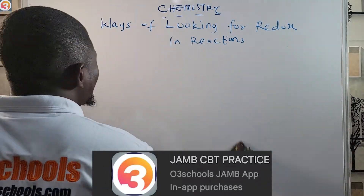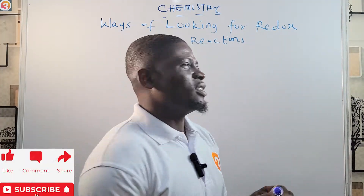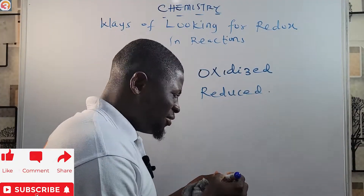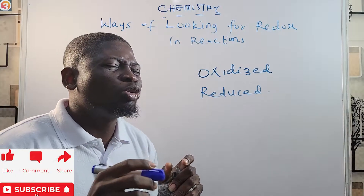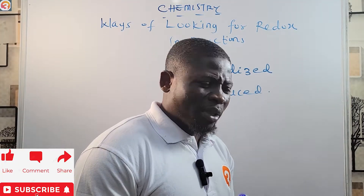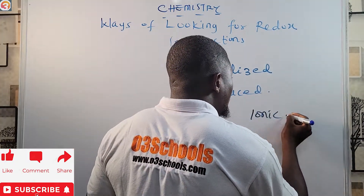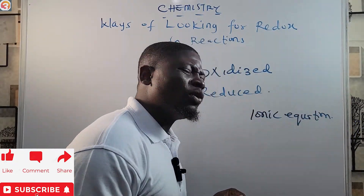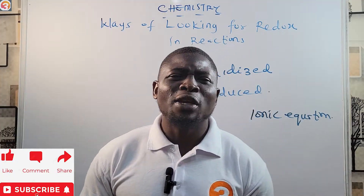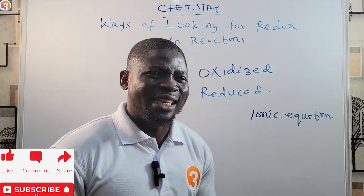Now let's look at ways of identifying redox in reactions. The most effective way — looking for the oxidized species or the reduced species — is by examining the oxidation number in the ionic equation. You'll be given a reaction, first write out the ionic equation, and after writing the ionic equation you assign oxidation states to determine which species is reduced and which is oxidized.